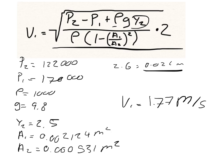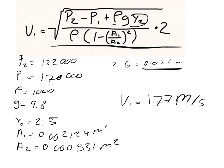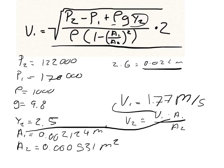We already solved for v2 using the continuity equation: v2 equals v1 times A1 divided by A2. Plugging in v1 = 1.77 m/s and the two areas, we get v2 equals 7.08 meters per second.